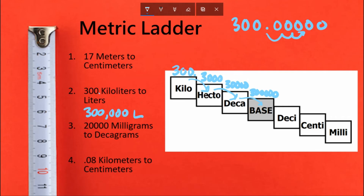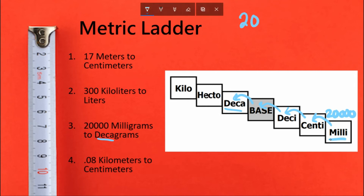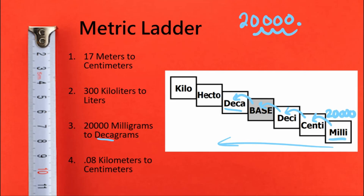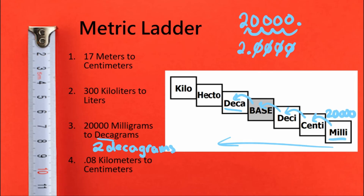Problem three: we started with 20,000 milligrams and we want to get to decagrams. Make sure you double-check — it's decagrams. We're going to move left — up the ladder — four steps. The decimal point is at the end of 20,000, so moving it four places to the left puts it right after the 2. We don't need the trailing zeros; our answer is 2 decagrams.